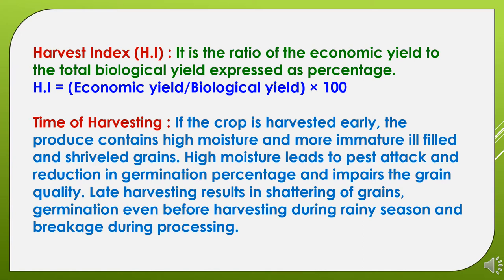Harvesting time is one of the important factors which depends upon the crop. It should be done according to the physiological maturity and harvesting maturity of the crop. If the crop is harvested early, the produce contains high moisture and more immature, ill-filled and shriveled grains will be present. Even with high moisture, if you are storing the grains, it will lead to pest attack, fungus development, reduction in germination, and impairment of grain quality. If we go for late harvesting, it will result in shattering of grains, germination even before harvesting if it coincides with rain, and breakage during processing. So timely harvesting is important.